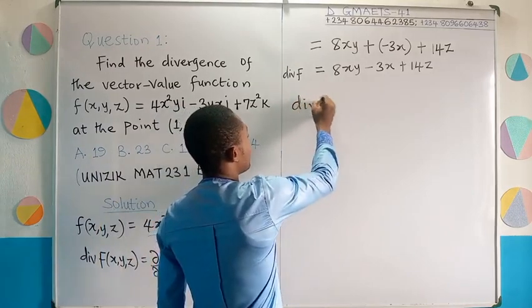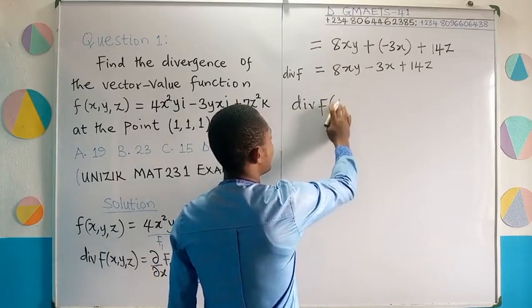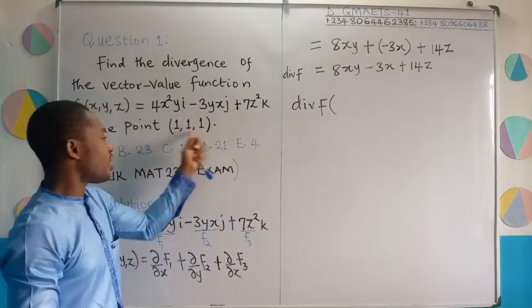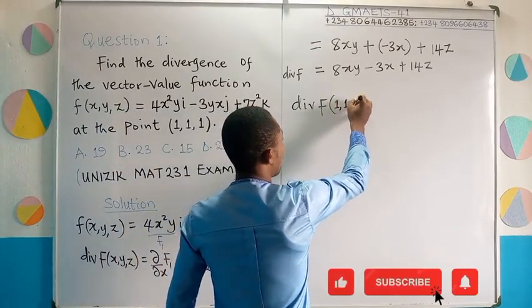So the divergence of the vector value function f, which depends on x, y, z. These are the values of x, y, z. Are you following right? So it's going to be at the point 1, 1, 1.